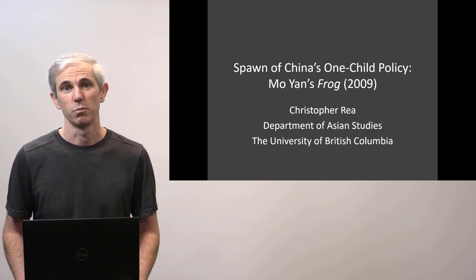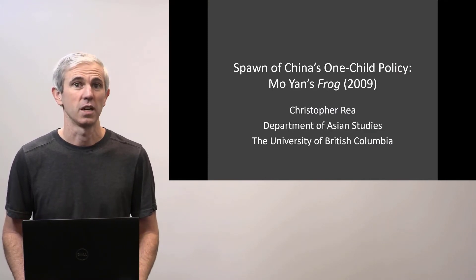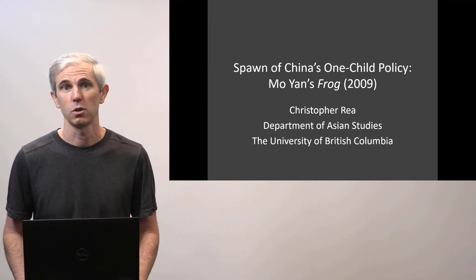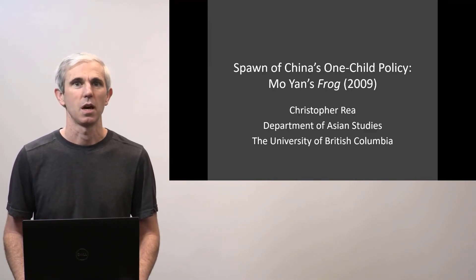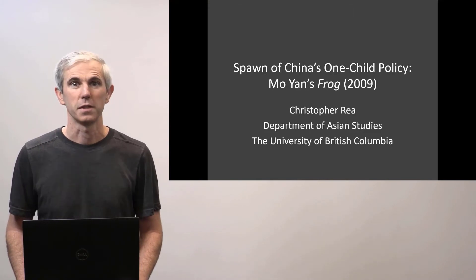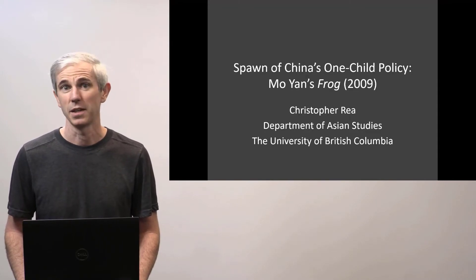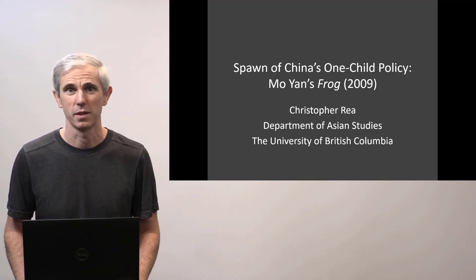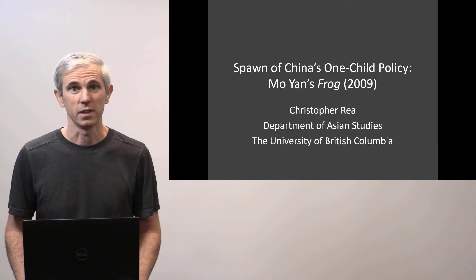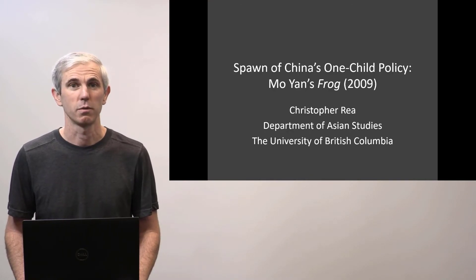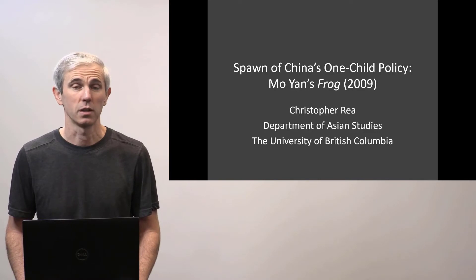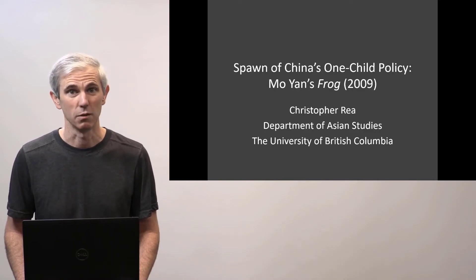Frog, to me, is one of Moyen's relatively overlooked and underappreciated novels, and one that is sometimes misunderstood as being simply topical about the one-child policy. This is a novel with a lot of complexities. We have a multi-part structure with letters and a play, a novel, and a lot of storytelling within the storytelling. And Moyen, in this creative retelling of history from a very personal perspective, has also chosen a very ingenious motif: the frog.